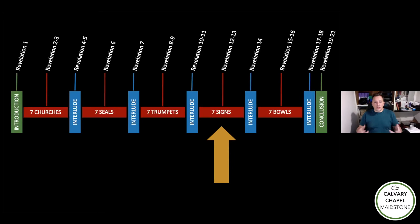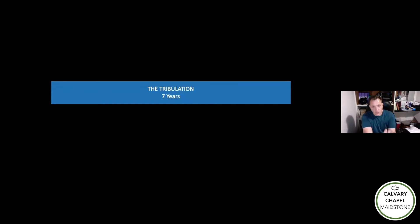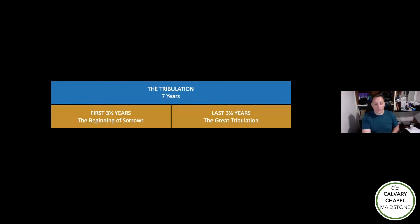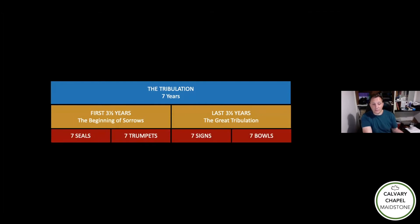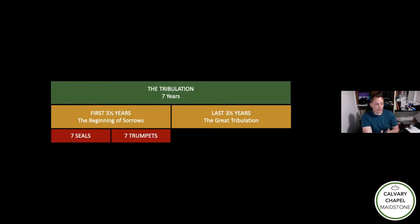The events of the great tribulation are first introduced through these seven signs, which are basically the cast of the great tribulation. The seven years of tribulation are divided into two halves of three and a half years each. The first half is typically called the beginning of sorrows, the second half is called the great tribulation. The seven seals and trumpets largely happen in the first half, and the seven signs and bowls happen in the second half. So we are right at the midpoint of the tribulation in chapter 12.